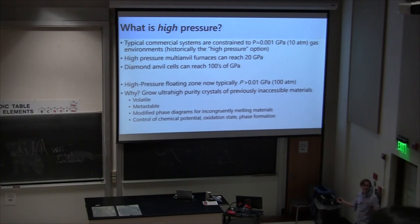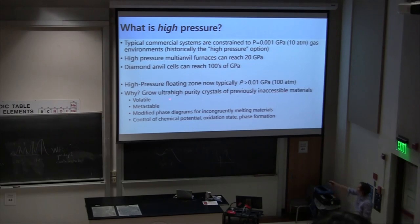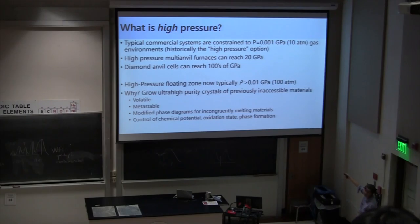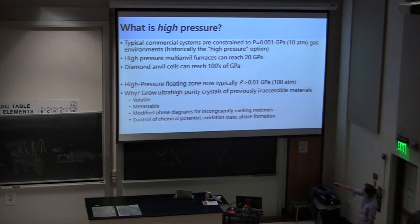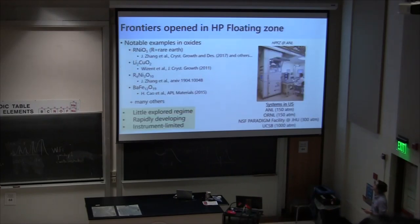Why is 100 atmospheres interesting? It's not very high pressure on an absolute scale, but it opens new windows for growing materials that were previously inaccessible to floating zone — the idea of getting ultra-high purity crystals of large volume of volatile or metastable materials. The key idea is being able to modify the phase diagrams by controlling the chemical potential of a reactive gas. For instance, if we're thinking of oxides, high pressure oxygen has a big impact on the phase diagram. So you can control the chemical potential, the oxidation state, and phase formation.